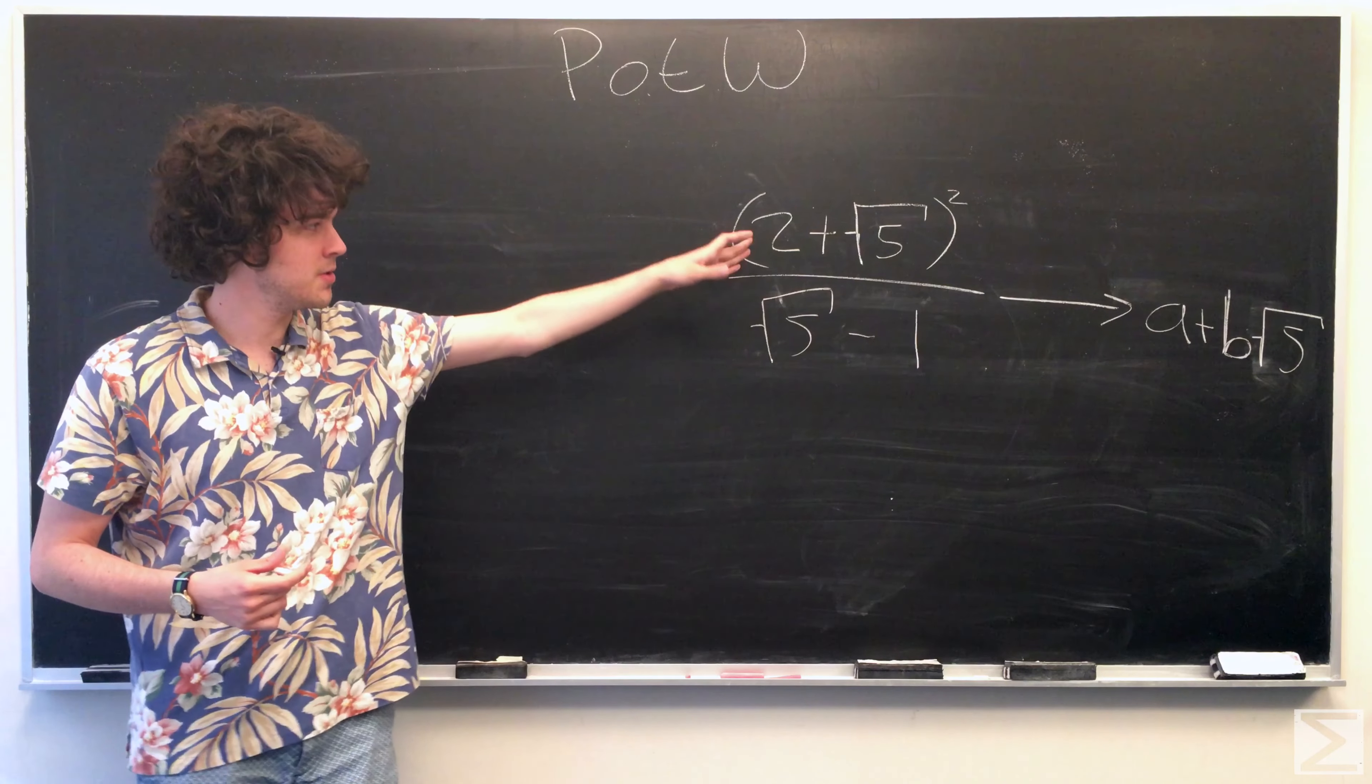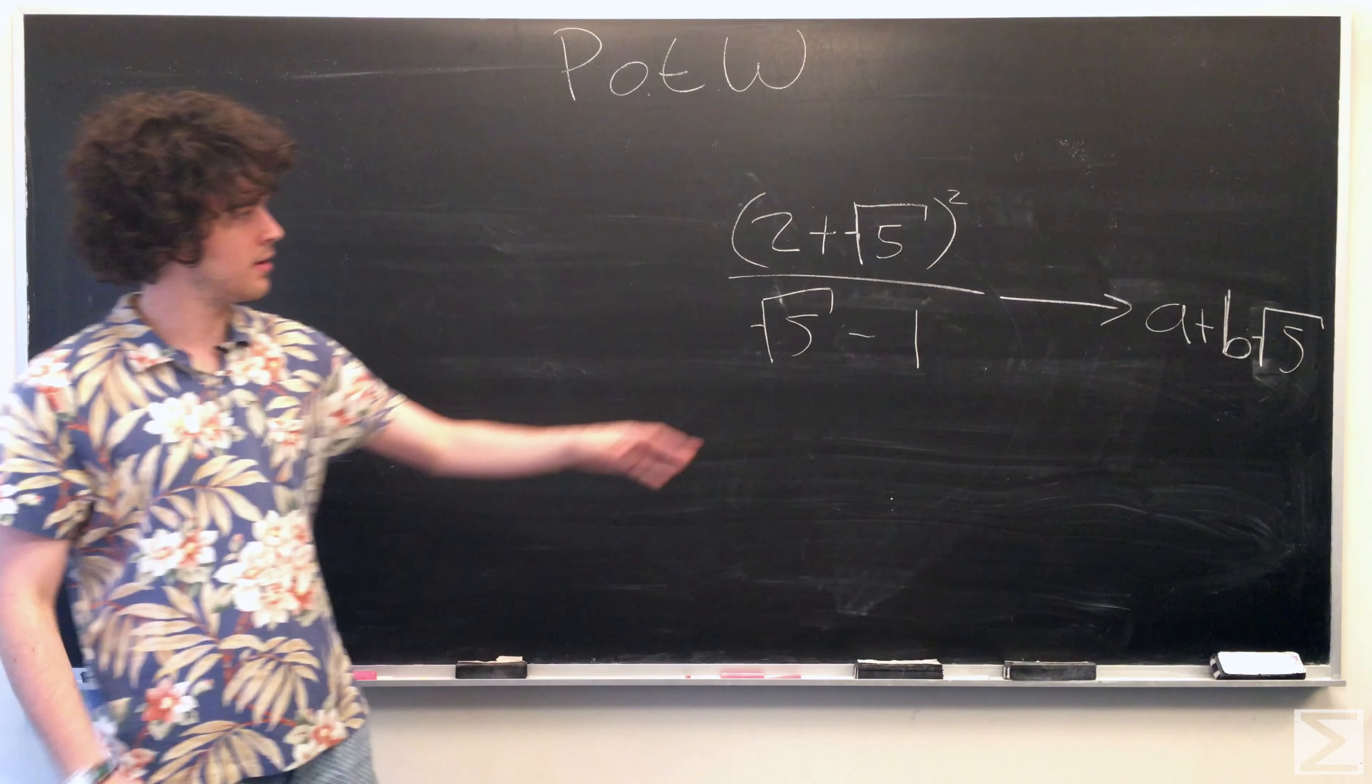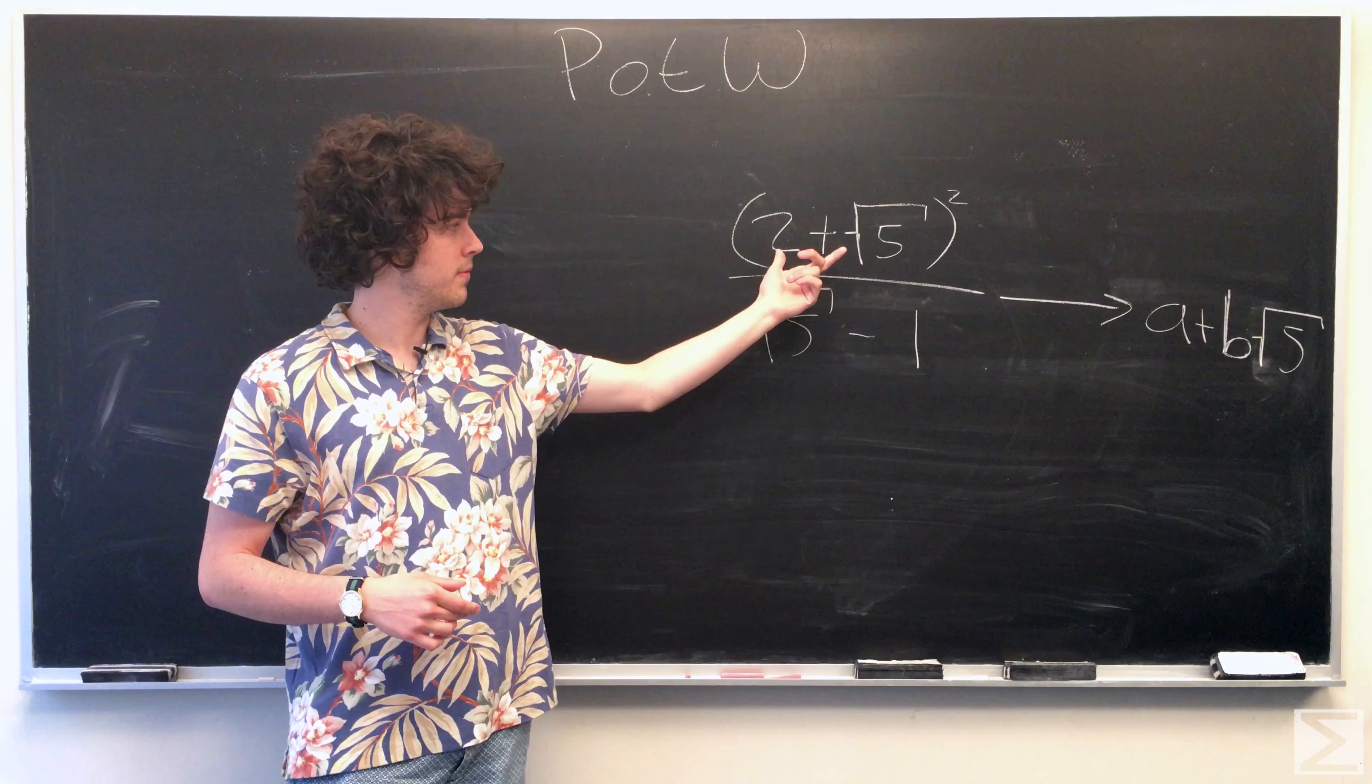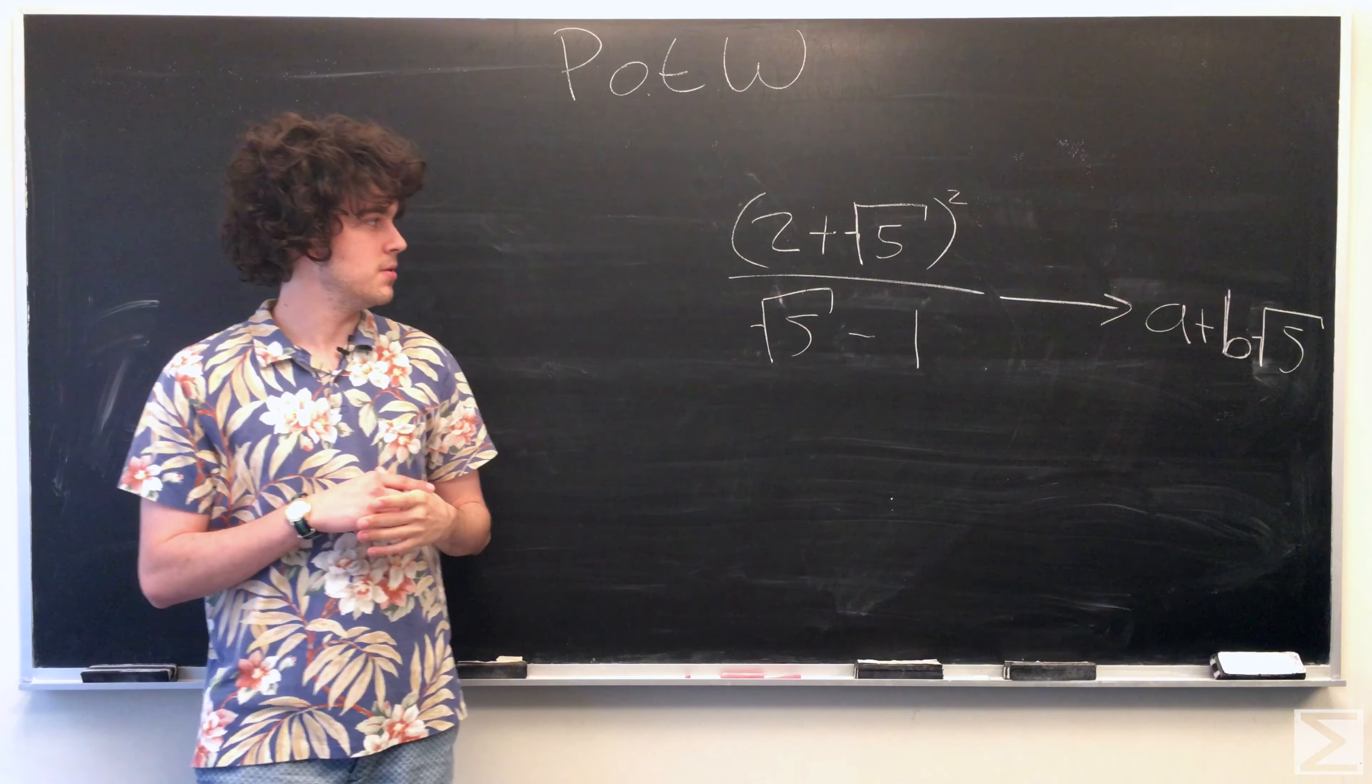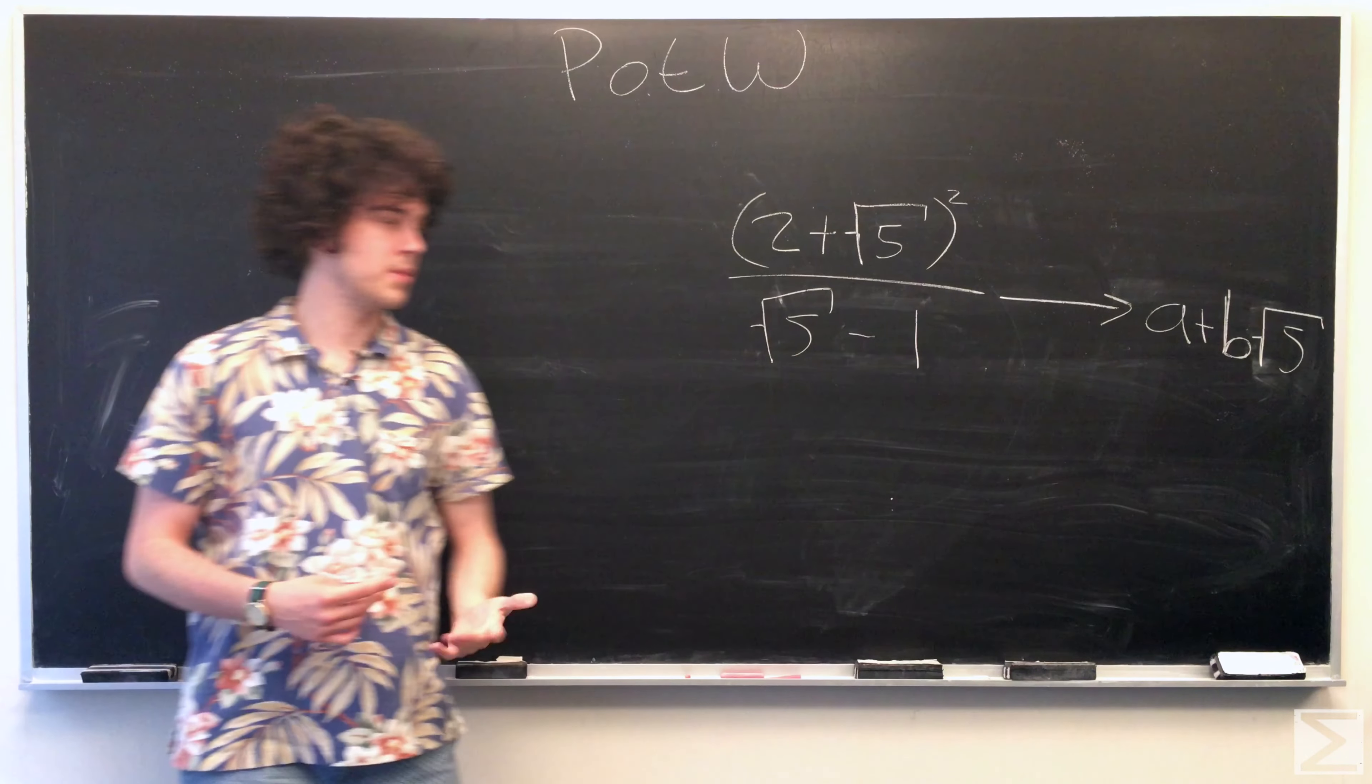So first of all, we're going to want to expand this 2 plus square root 5 squared. And that will give us some kind of, we can see here, this root 5 will go away into just 5 once we square it. But we're also going to have a cross term of 2 plus 2 root 5. So that's just going to keep our root 5 there. So we want to obviously have one part that's not with the root 5 and one part that's with the root 5.